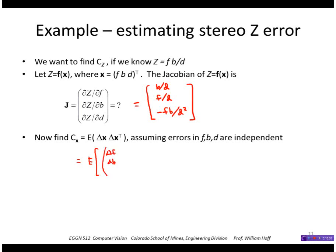We can take that as the expected values of delta f, delta b, delta d, and then times the transpose of that. And since the cross covariances are zero.